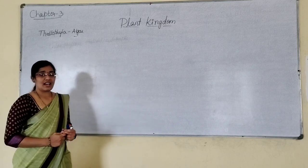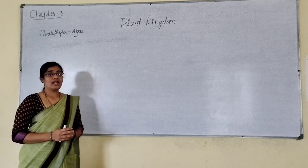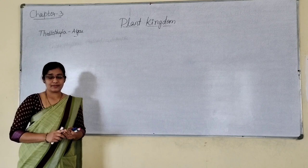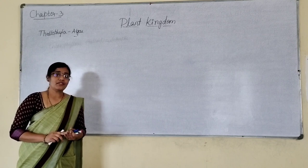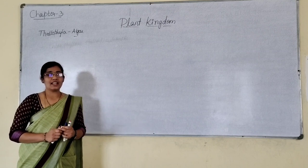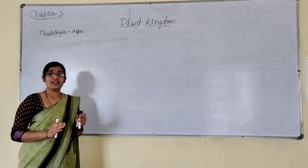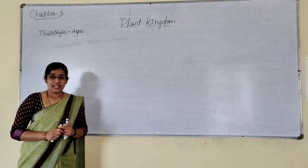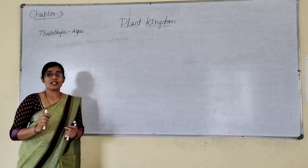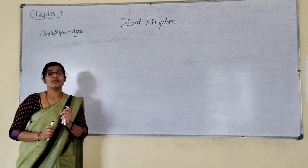The members of algae bear chloroplasts in their cells, and the body of algae is not differentiated into root, stem, and leaves. When the plant body is not differentiated into root, stem, and leaves, that type of plant body is called a thallus. As the algae bear chloroplasts in their cells, they will be photosynthetic in nature, and by the process of photosynthesis, these members are capable of producing their own food.